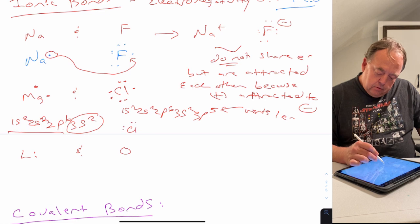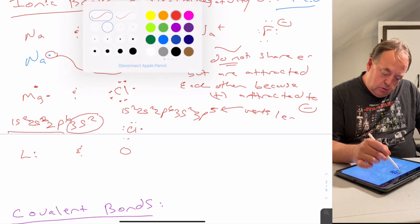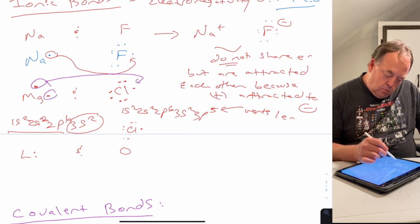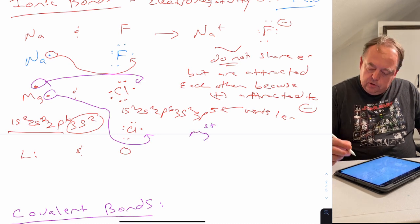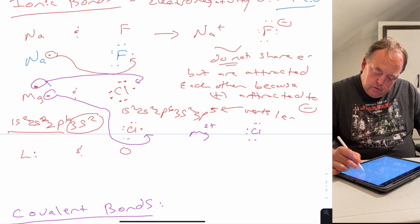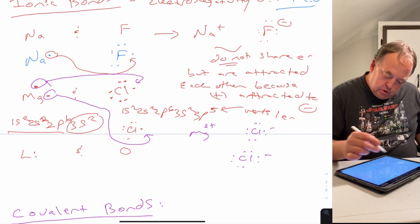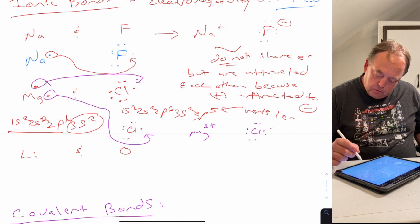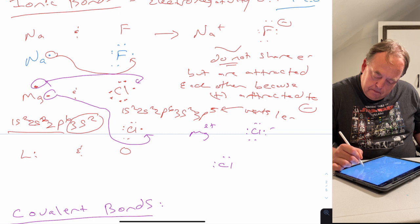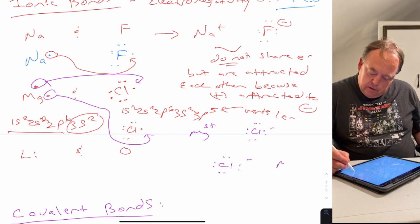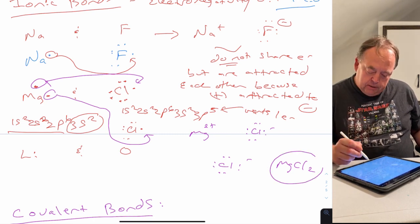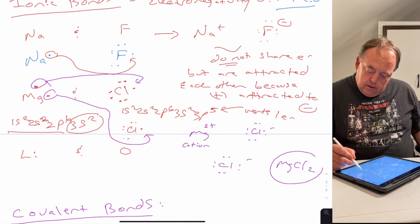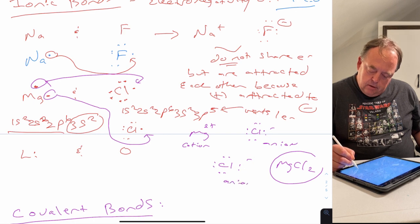Since magnesium wants to lose two electrons but chlorine only wants to gain one, you need two chlorine atoms. Magnesium loses one electron to each chlorine, giving Mg²⁺ and two Cl⁻. This is MgCl₂ — an ionic compound consisting of an Mg²⁺ cation and two Cl⁻ anions, with no sharing of electrons between them.